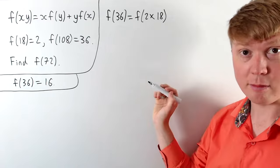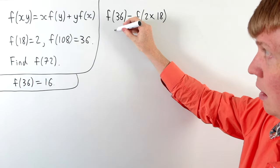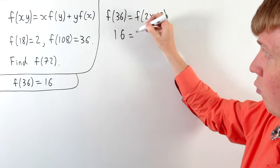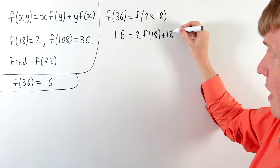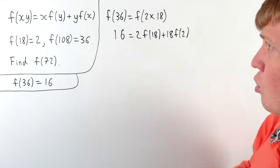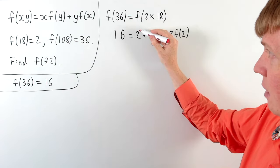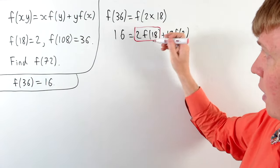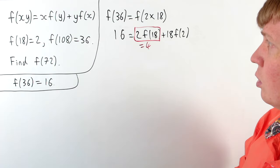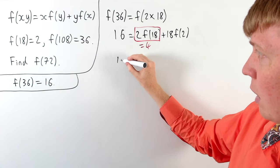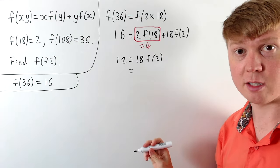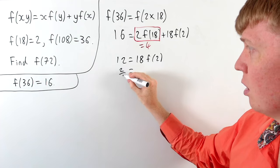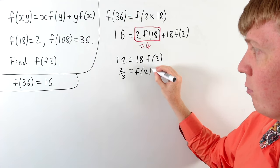So we know on the left hand side f of 36 is just 16 from before. Then we can write the right hand side as 2 times f of 18 plus 18 times f of 2. And we know that f of 18 is just 2, so 2 times f of 18 gives us 4. So then taking away this 4 we get 12 equals 18 f of 2. So dividing through, 12 over 18 simplifies to 2 thirds as our value for f of 2.